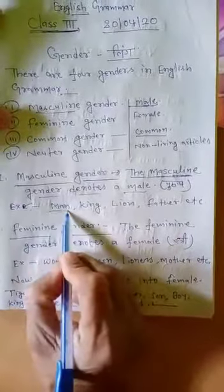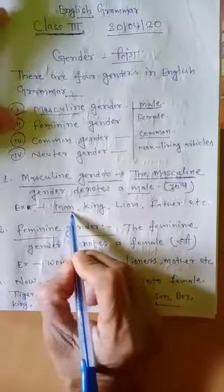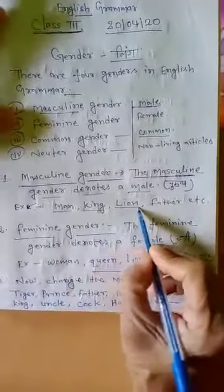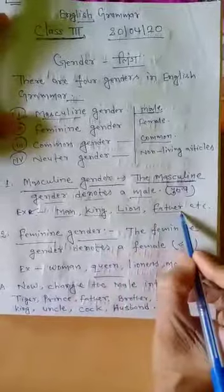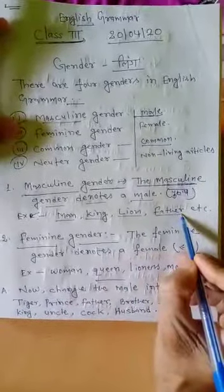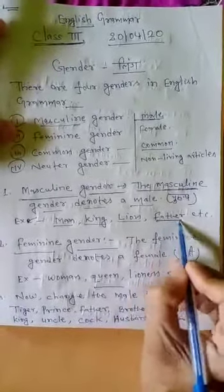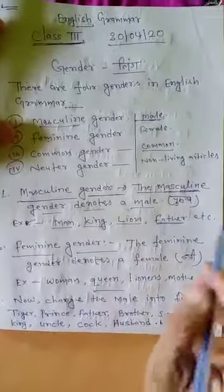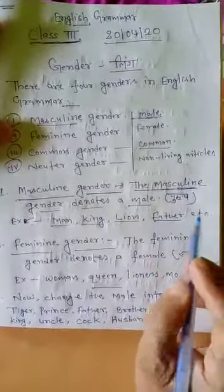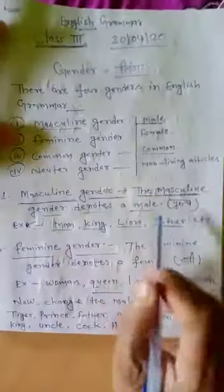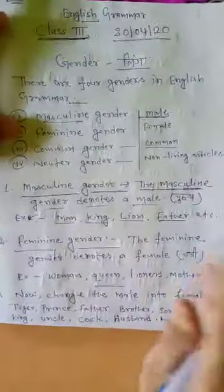Man, king, lion, father, pita — all are male. So these are masculine gender. Okay.